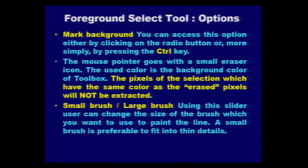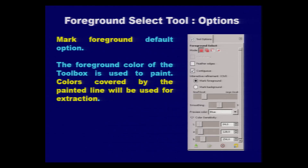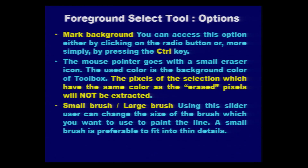One more option available is the brush size slider — ranging from small brush to large brush. It changes the size of the brush used to draw the line. If the currently selected area from the image is very small, pick a small brush size; if the area is large, you can change this slider accordingly. Using this slider you can change the size of the brush as needed.